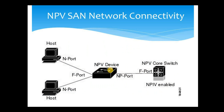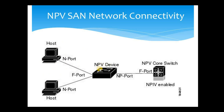This is a very simple NPV SAN network connectivity diagram. Here we have an NPV core switch, an NPV device connected to it where NPV is enabled, and hosts connected to the NPV device. First, let's discuss how things work if the device is not NPV-enabled. Once this device is connected to the core switch, it will get a domain ID, and all the hosts connected to this switch will be assigned an FCID during the FLOGI process.